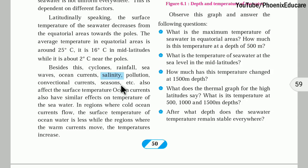We are talking about the upper surface of the seawater. Ocean currents also have similar effects: in regions where cold ocean currents flow, the surface temperature of the ocean is less. Where hot water currents flow, the surrounding temperature is higher. Where cold water currents flow, the surrounding temperature is lower.